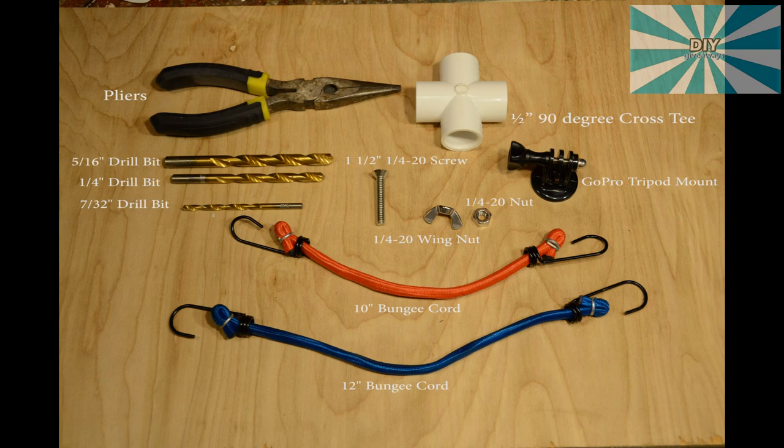Half inch 90 degree cross tee, a GoPro tripod mount, one and a half inch quarter 20 screw, quarter 20 wing nut, quarter 20 nut, 10 inch bungee cord, and a 12 inch bungee cord.